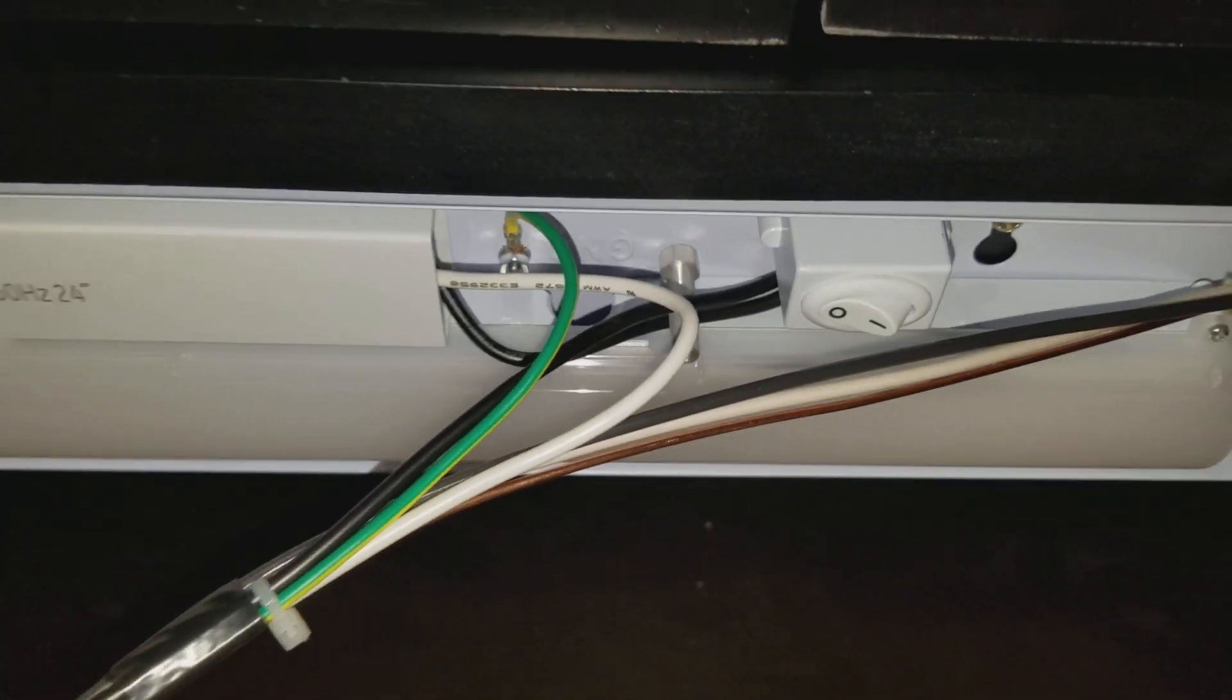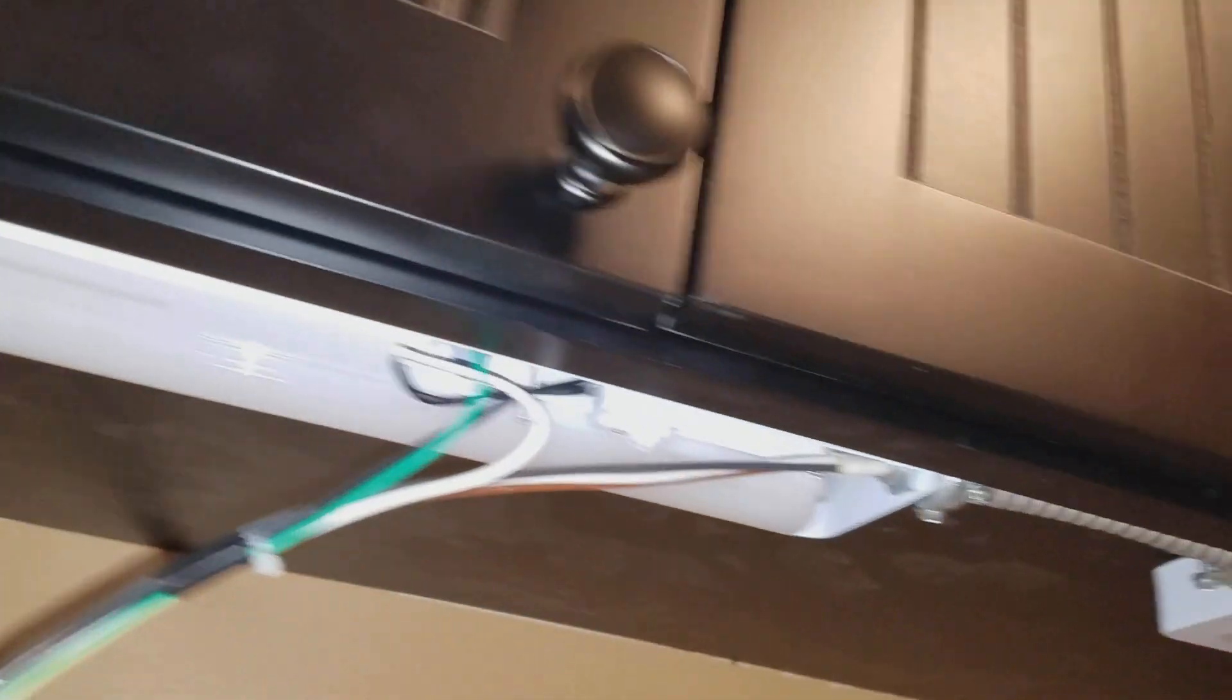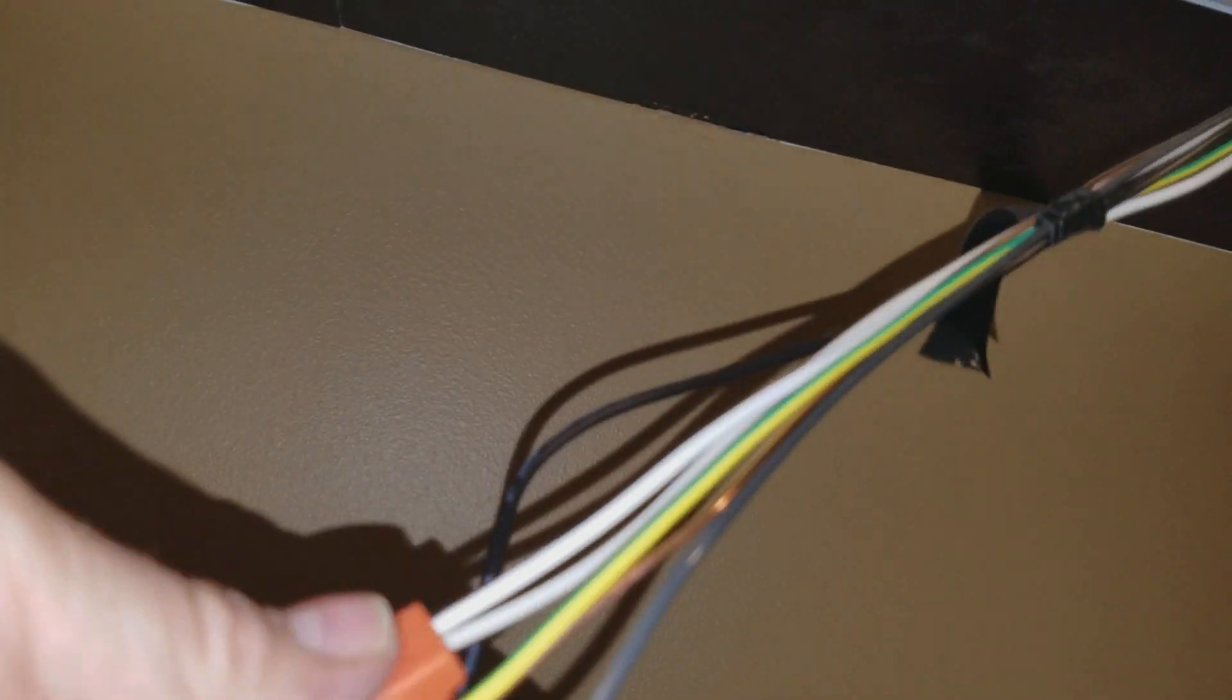And when it comes into the light fixture, then we remove the sheathing. So we've already made our connections in this one here. We're not powered up yet, though. And we are wrapping these wires together. And they come into these push-in connectors here. And then they will connect up to this light.